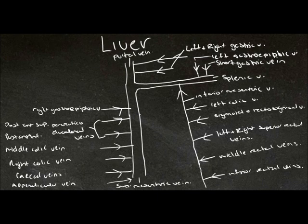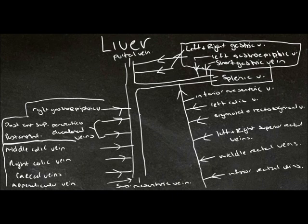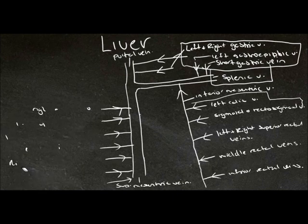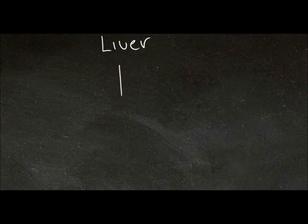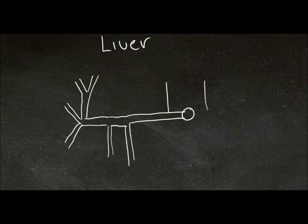So as you can see here, we've got veins from the stomach, veins from the spleen, veins from the pancreas and small intestines, and veins from the large intestine, all supplying that nutrient-rich and oxygen-poor blood to the portal vein.